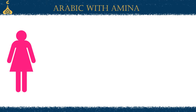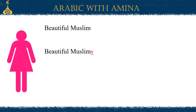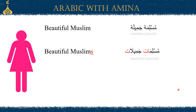Now let's put together what we learned about making plural nouns and plural adjectives. We'll explain this in English first so you can see the difference in Arabic. Our example is 'beautiful Muslim.' In English, to make this plural we say 'beautiful Muslims' — notice the 's' is only added to the word Muslim; the adjective 'beautiful' is not transformed into a plural form. Now in Arabic: beautiful Muslim is muslima jamila. To make it plural, it becomes muslimat jamilat. Notice how, unlike English, both the noun and the adjective are put in the plural form.